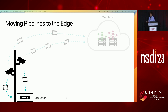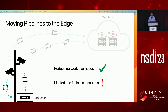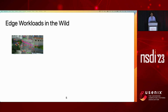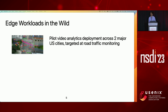As with any shift to the edge, there are pros and cons. On one hand, this sidesteps the network bandwidth and latency overheads of going to a potentially distant cloud. On the other hand, you are forced to rely on compute resources that are strictly inferior and less elastic than their cloud counterparts. To better understand the implications, we studied a pilot video analytics deployment in collaboration with two major U.S. cities, targeted at road traffic monitoring.